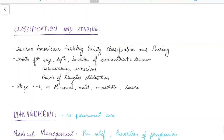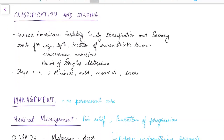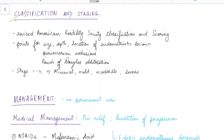Endometriosis is classified and staged based on the Revised American Fertility Society classification. Scoring points are given for size, depth, and location of endometriotic lesions, periovarian adhesions, and pouch of Douglas obliteration. There are four stages: minimal, mild, moderate, and severe.